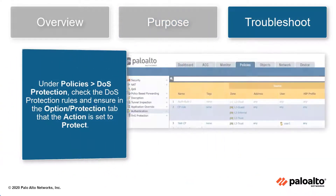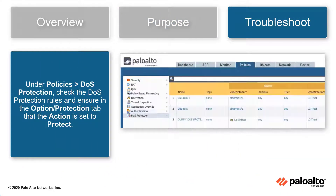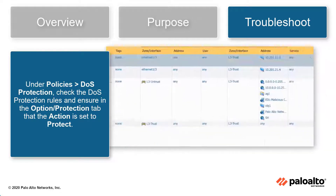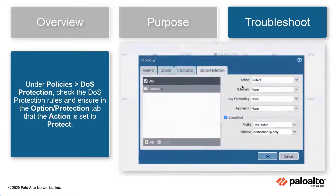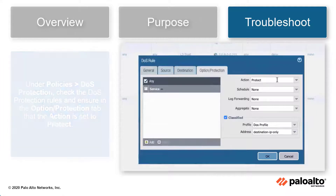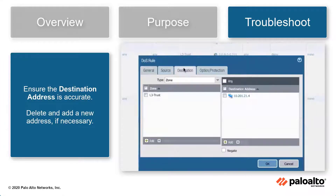Navigate to Policies, then DOS Protection. Click each DOS Protection Rule and ensure that under the Option Protection tab, the action is set to Protect. Additionally, under the Destination tab, ensure that the destination address is accurate, or delete and add a new address if necessary.